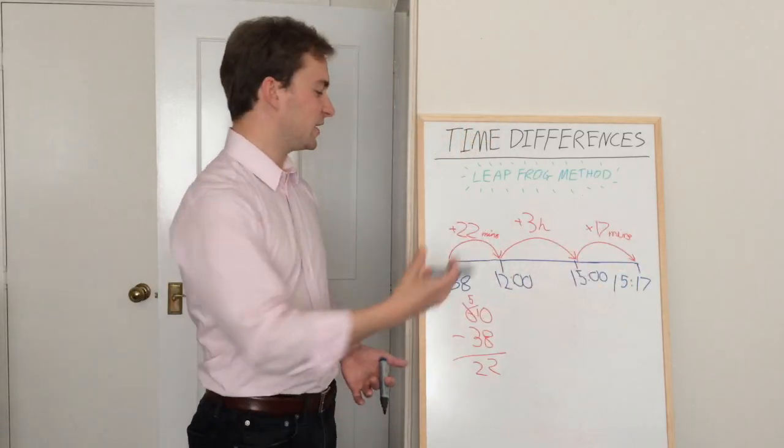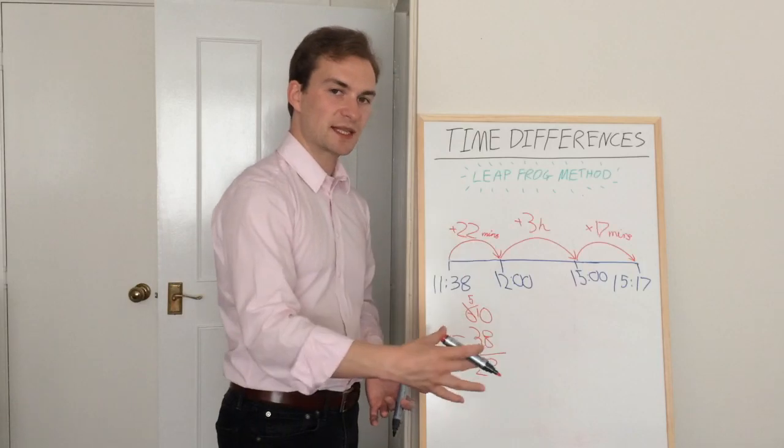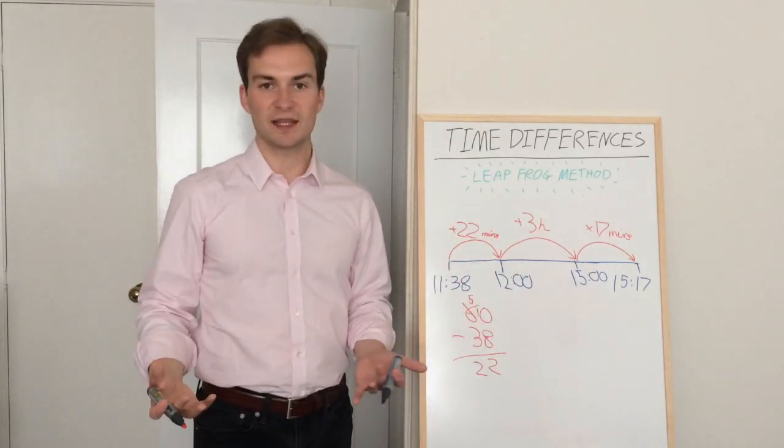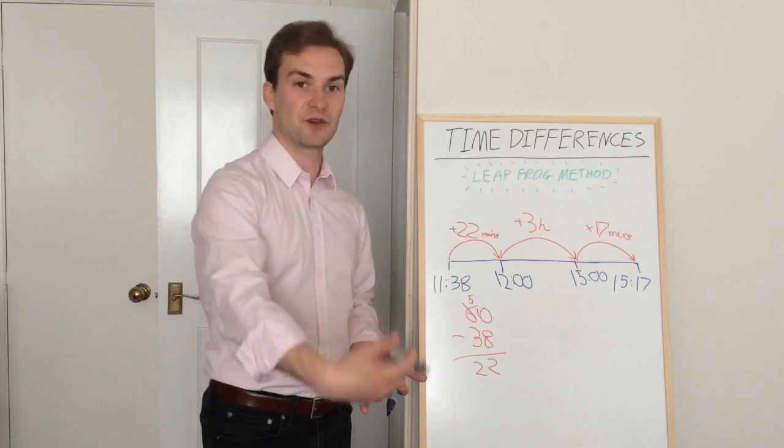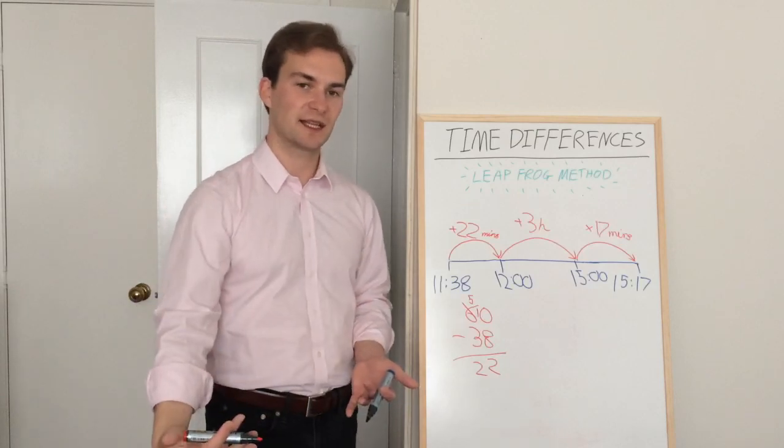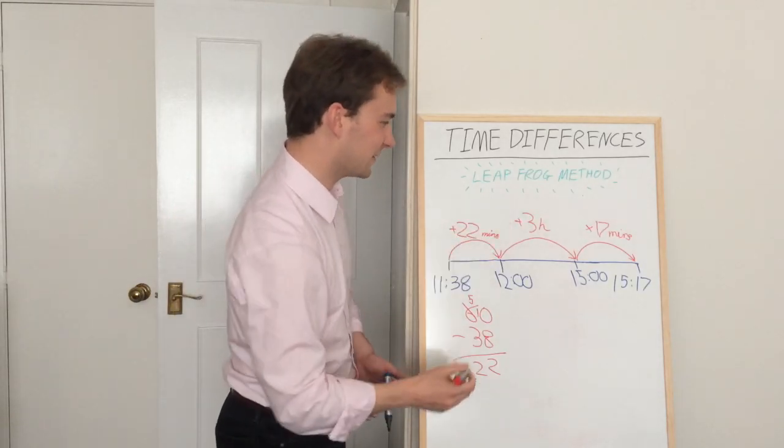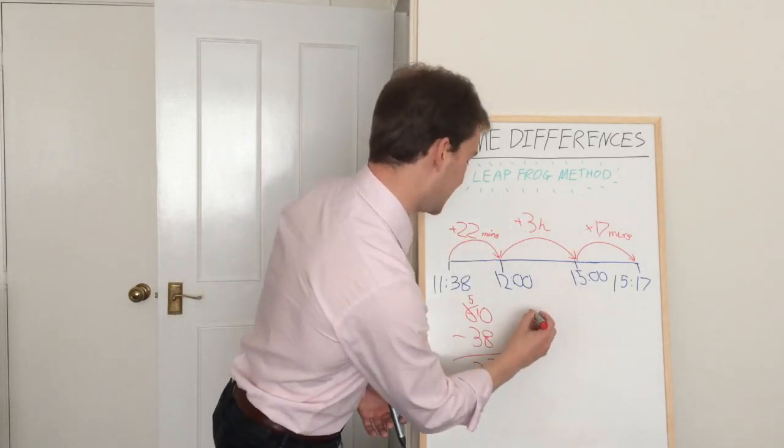The final part, we just have to add these together. So we want to add the minutes together separately, and then we're going to put the hours in after that. Sometimes when you're adding the minutes, you might find there'll be an extra hour in there if your number goes over 60. Thankfully I know this one won't, so let's have a look at it. We've got 22 plus 17. So let's do that over here.